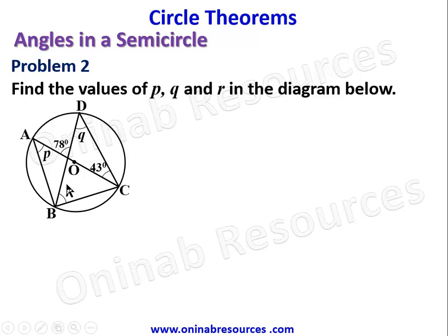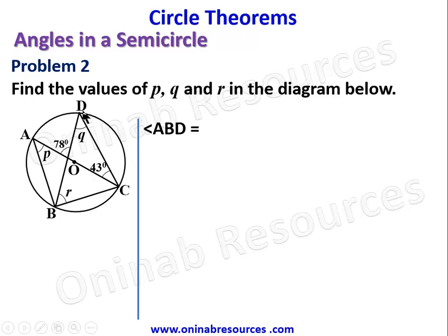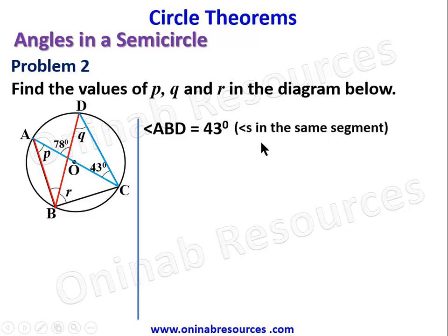Since AC is the diameter, angle ABC is 90 degrees. Before finding R, we need to find angle ABD. Angle ABD is formed by lines from A and D, and there are other lines from A and D forming an angle of 43 degrees.